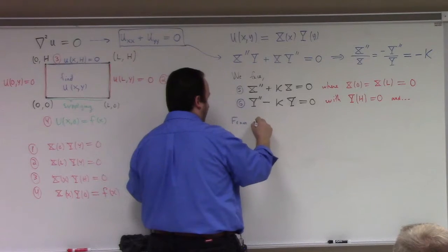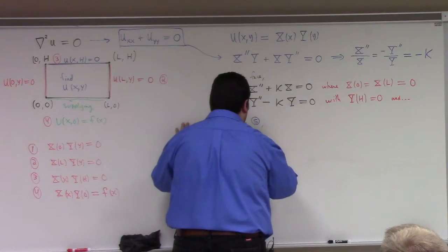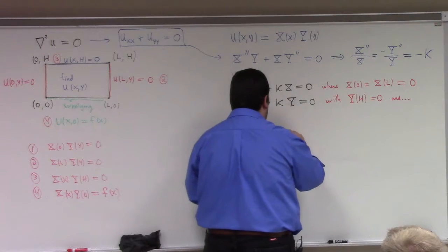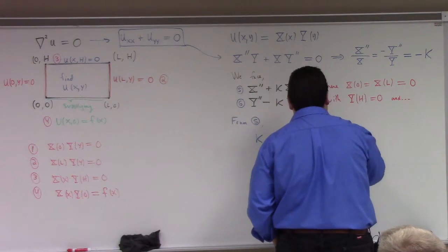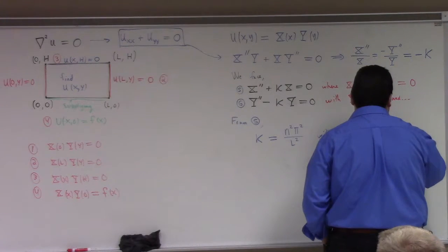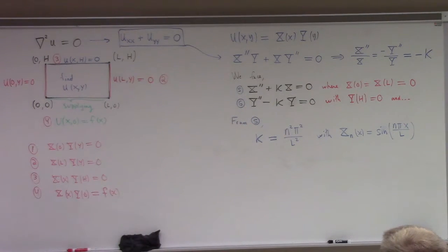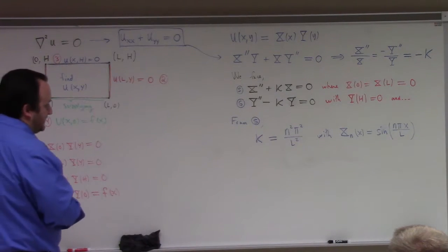From condition 5 — that is X of 0 equals X of L equals 0 — I see that K is equal to N squared pi squared over L squared, by the first proposition in my chapter. And X sub N of x equals sine of N pi x over L. Fixed homogeneous endpoints give sine solutions, and the characteristic value is N squared pi squared over L squared.